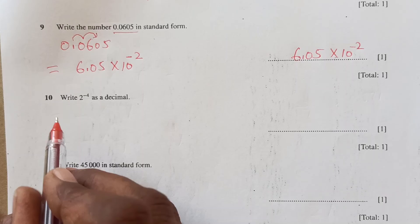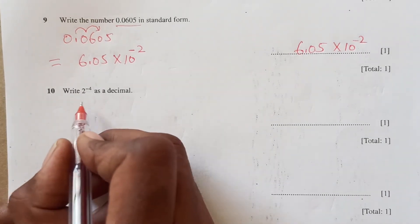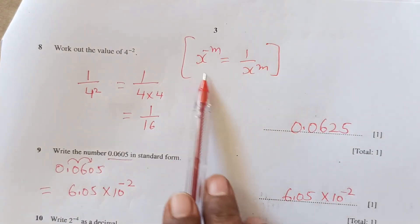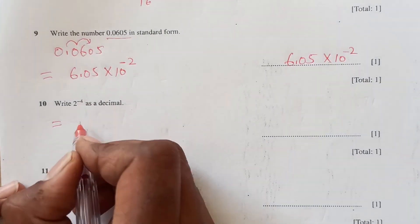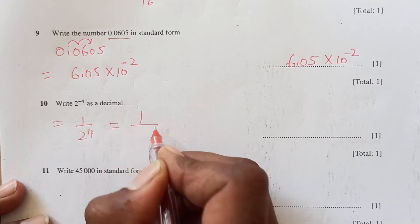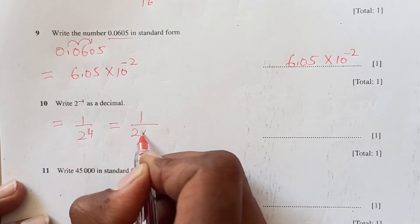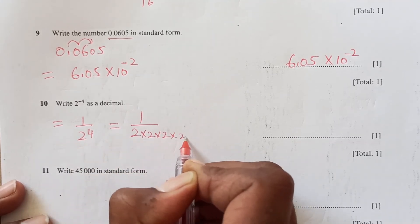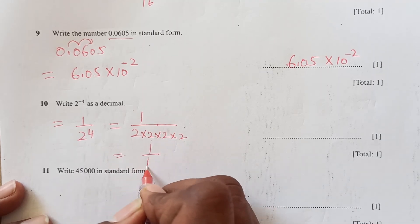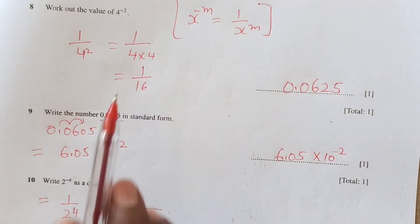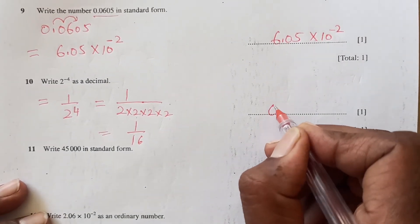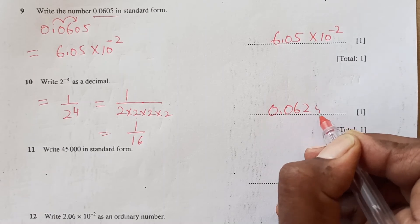Now write 2^(negative 4) as a decimal. Using the same rule: 1 over 2^4 = 1 over 2×2×2×2 = 1 over 16, which is 0.0625 — the same answer as before.